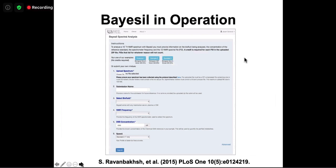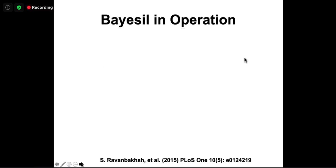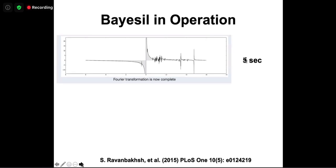How does BASIL work? You start with a screen where you upload your spectrum. You provide a name, tell it whether it's plasma, serum, or cerebrospinal fluid, specify the NMR instrument frequency (500, 600, 700, or 800 MHz), indicate how much DSS referencing compound was added, and choose between fast or slow processing. Then you click go.